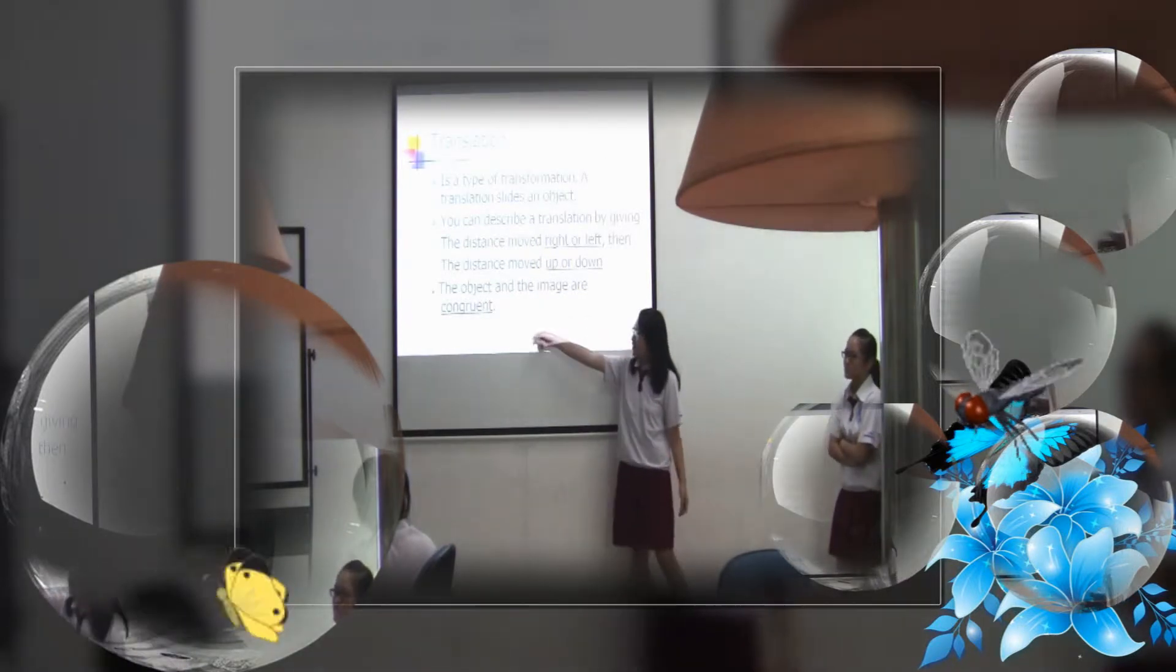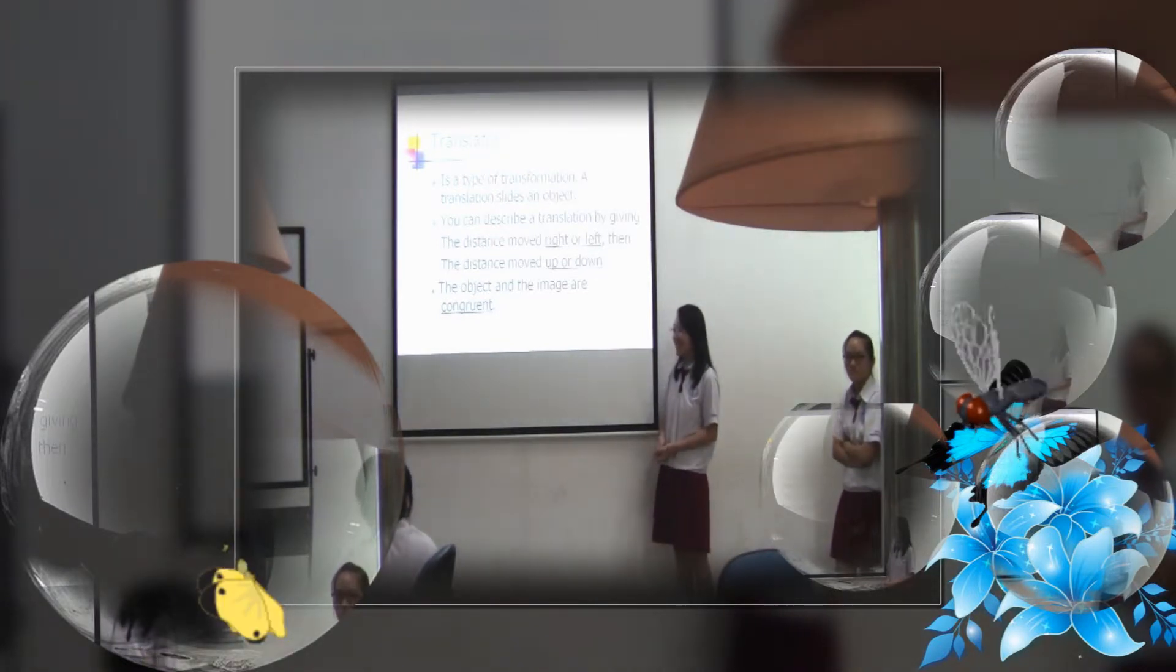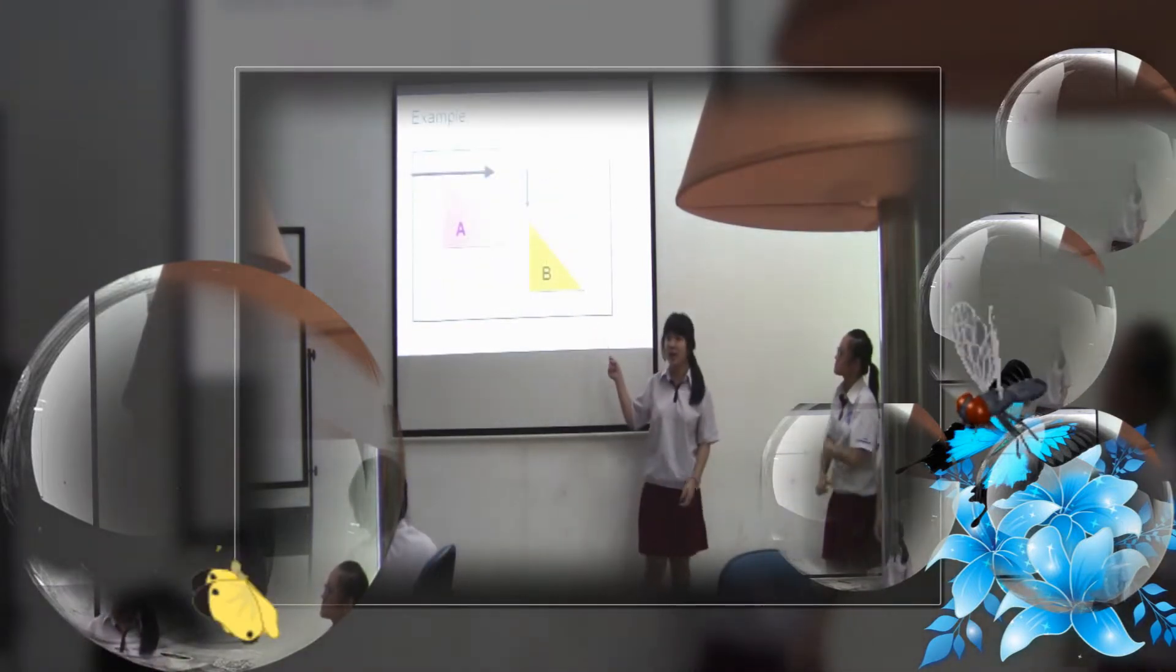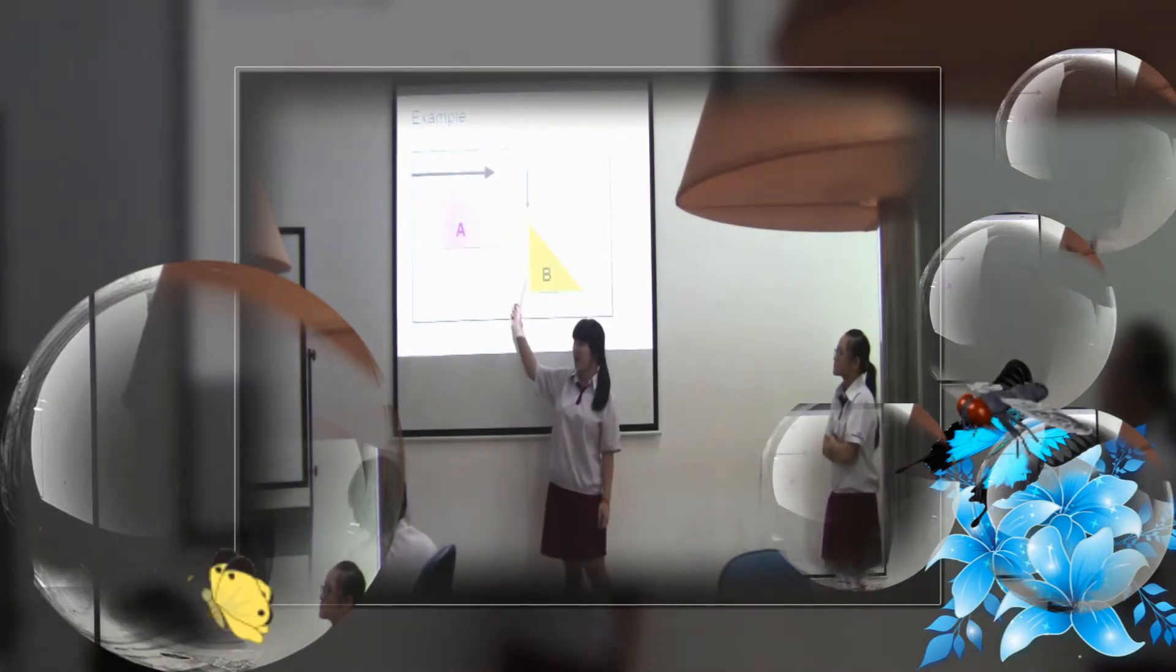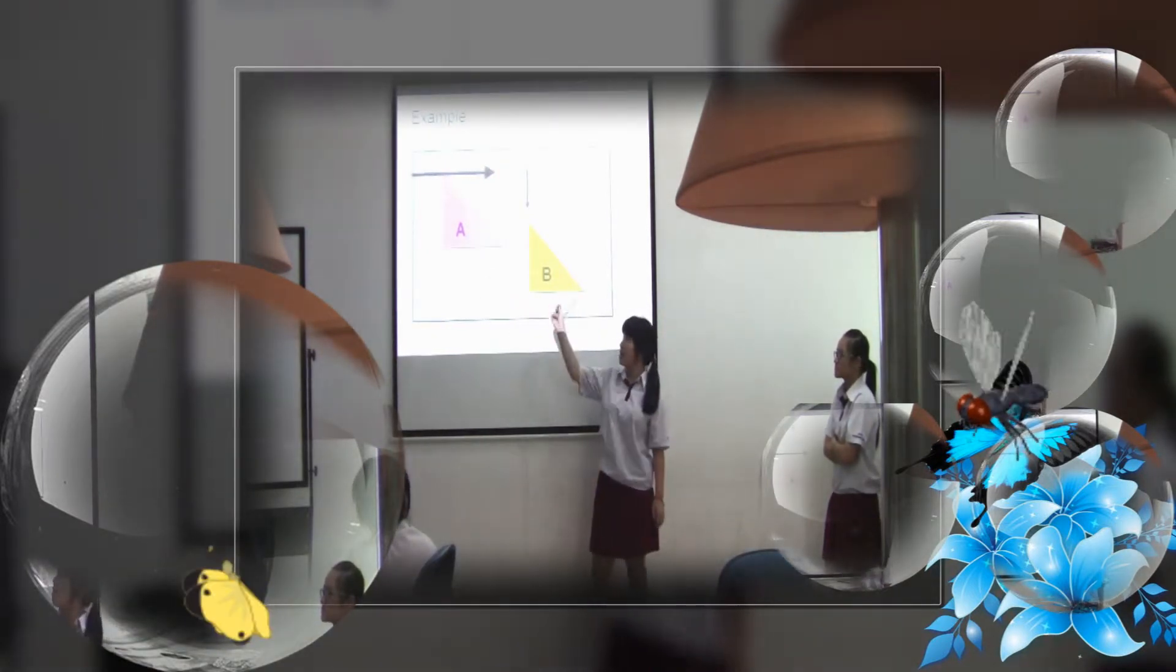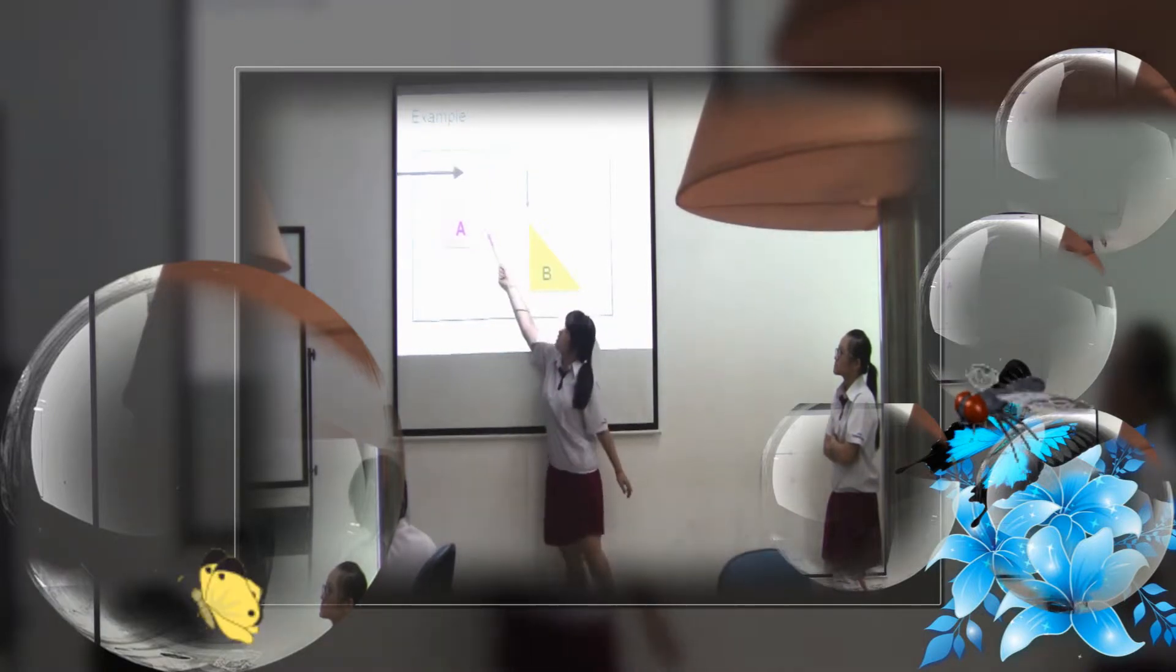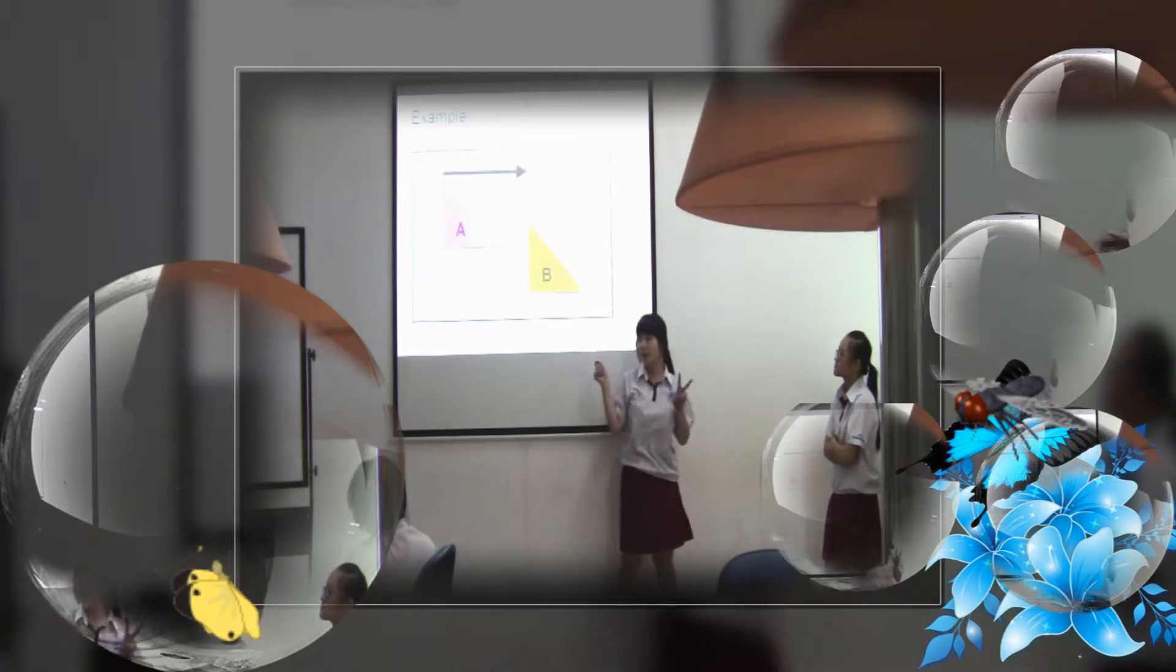So this is the first example of the topic translation. This is object A and object B. If you want to translate object A to object B, we will move object A 3 units (1, 2, 3) right and 2 units (1, 2) down.